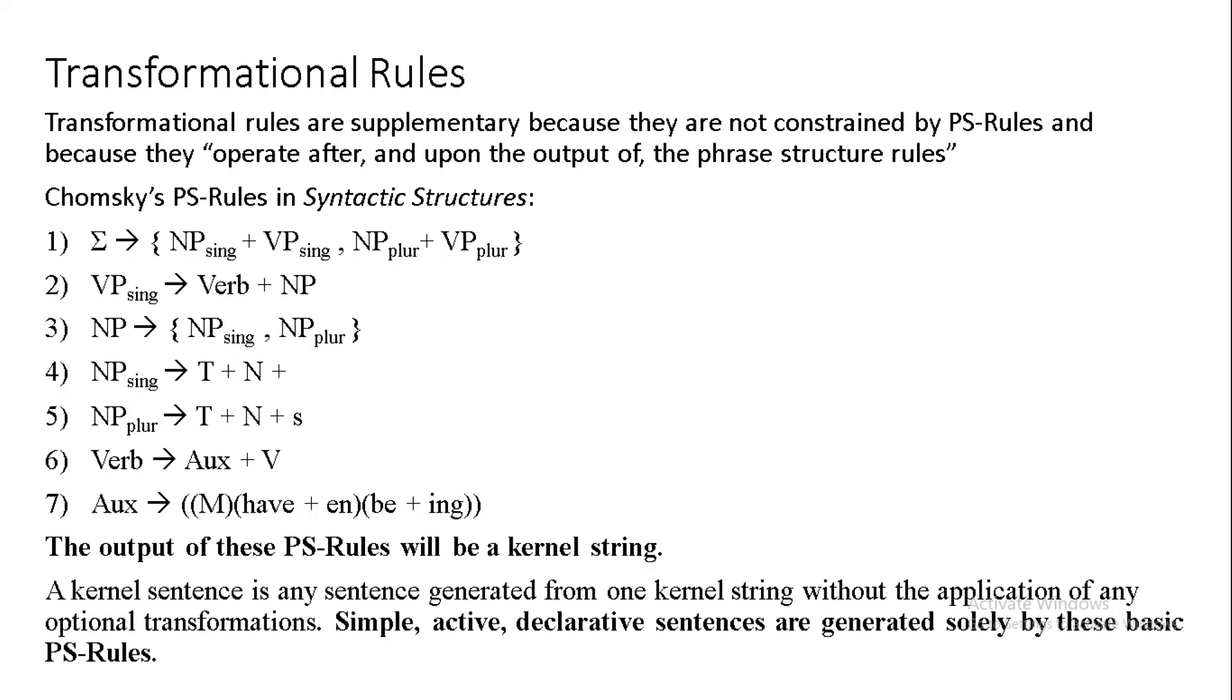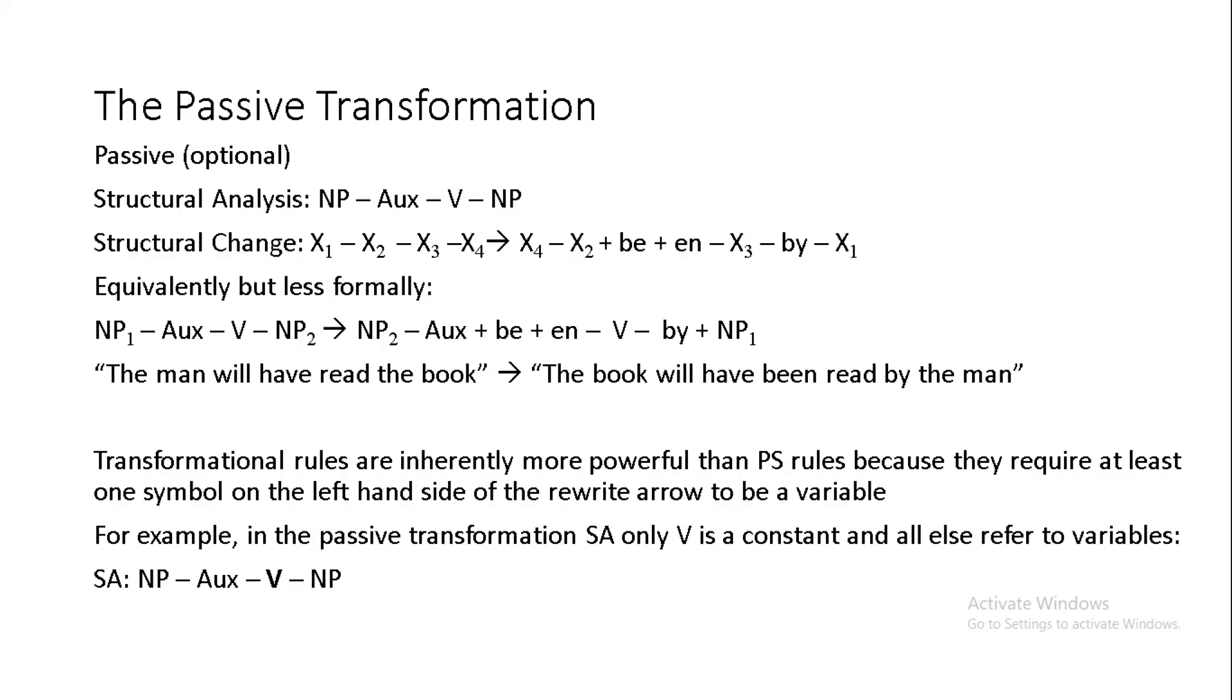In order to account for such transformations, one might propose certain supplementary transformational rules which are not necessarily constrained by the form of the particular grammar's phrase structure rules. Such transformational rules would be supplementary in the additional sense that they would operate after and upon the output of the phrase structure rules. The phrase structure rules given in syntactic structures itself include the following, which you can basically just read yourself on the screen because they're largely redundant of the rules we've already covered. For our purposes right now, it is most important to note that the output of these phrase structure rules will be a kernel string. A kernel sentence is, therefore, any sentence which is generated from one kernel string without the application of any optional transformations. Under this view, the simple active declarative sentences could be seen as generated solely by these basic phrase structure rules.